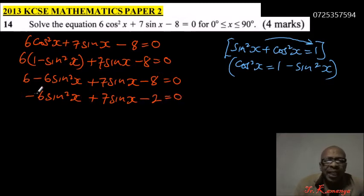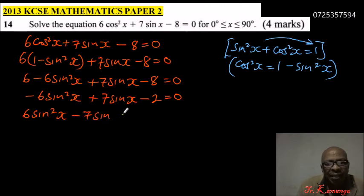To get rid of this minus sign here so that our equation looks better, we take everything across the equal sign. So this will be positive: 6 sin²x. 7 sin x crosses the equal sign becomes -7 sin x. -2 crosses becomes +2 = 0.